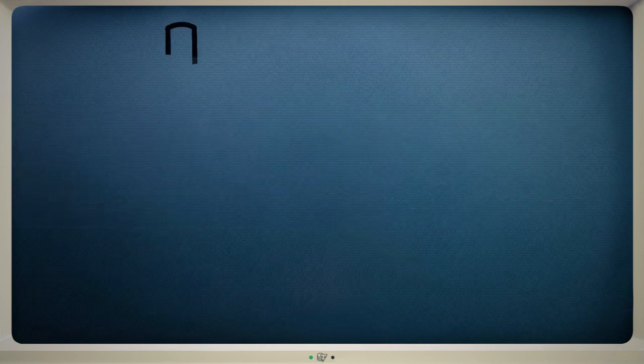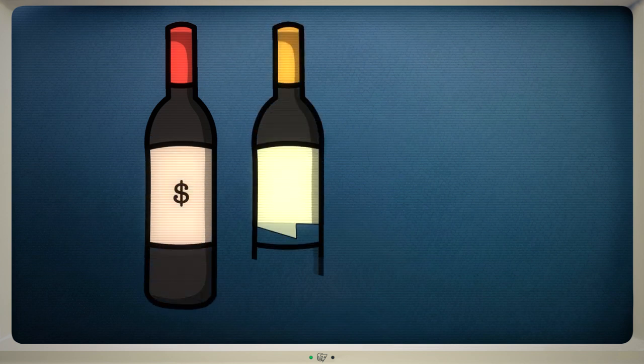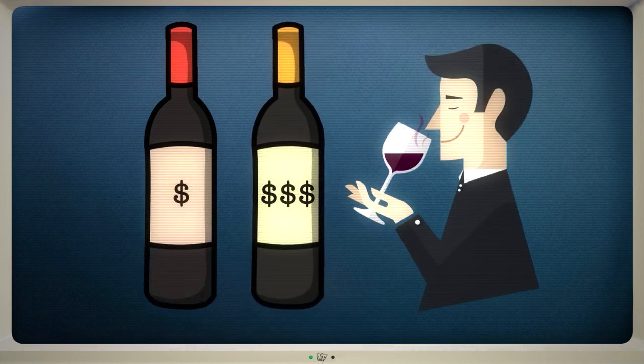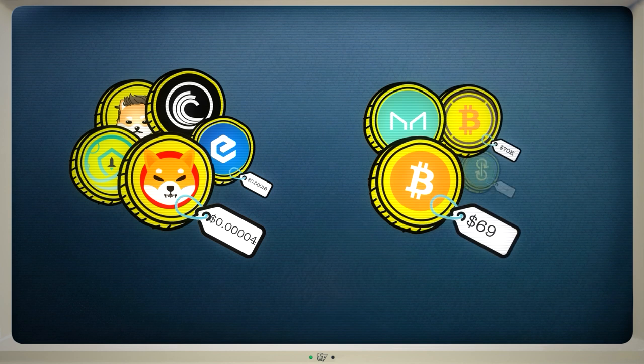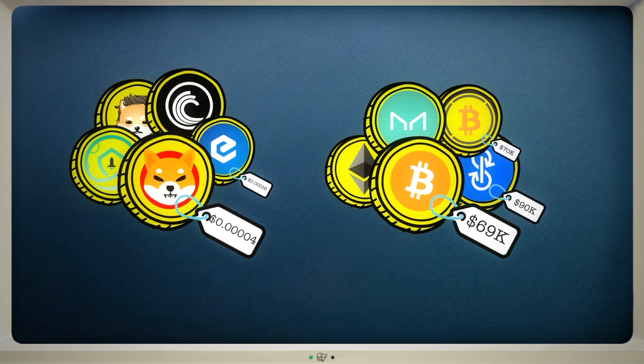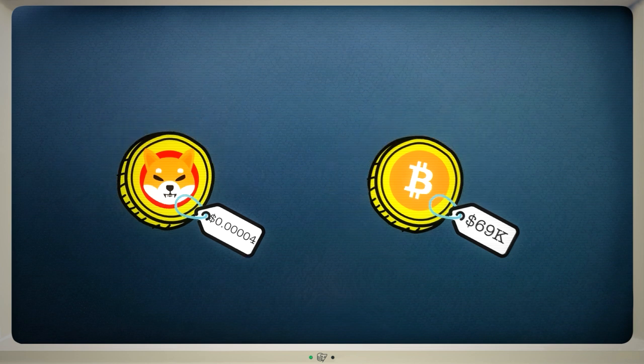In the world of wine, higher prices mean you'll normally get a better bottle. Things are different in the world of cryptocurrencies. You can buy some coins for under a cent, while others cost tens of thousands of dollars. But don't be fooled into thinking one cryptocurrency is better than another based on its price.